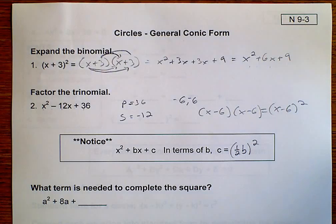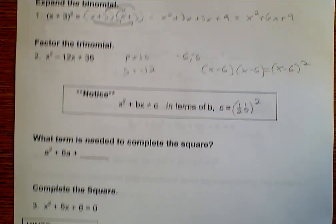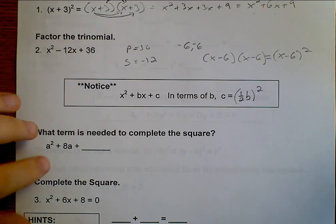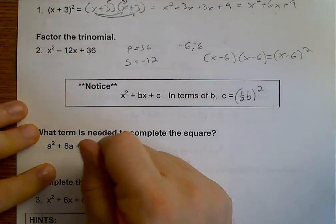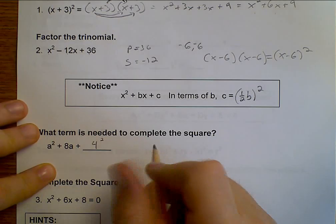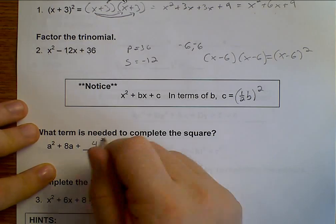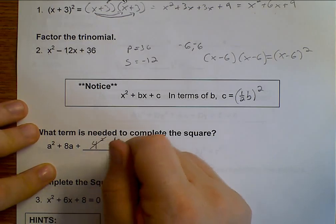So let's go ahead and take a look at this. Half of 8 is 4, squared gives us 16.